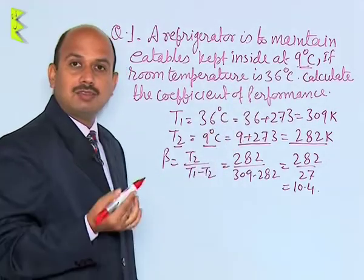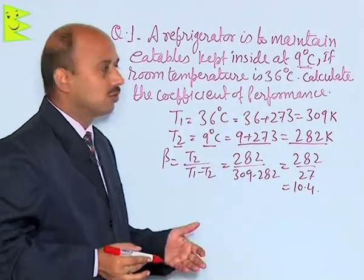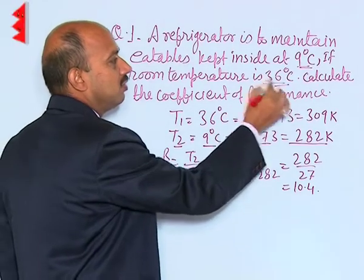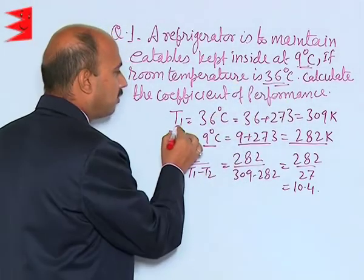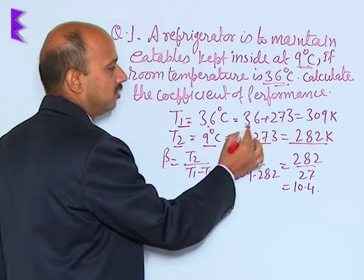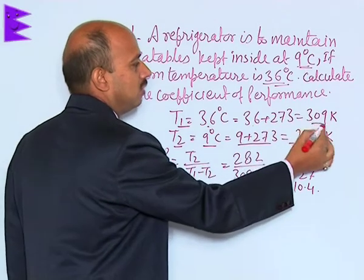Now, if room temperature - the room is acting as surroundings, that is called the source. Here it is 36 degree Celsius. Temperature of surrounding is 36 degree Celsius, that is 36 plus 273, which equals 309 Kelvin.